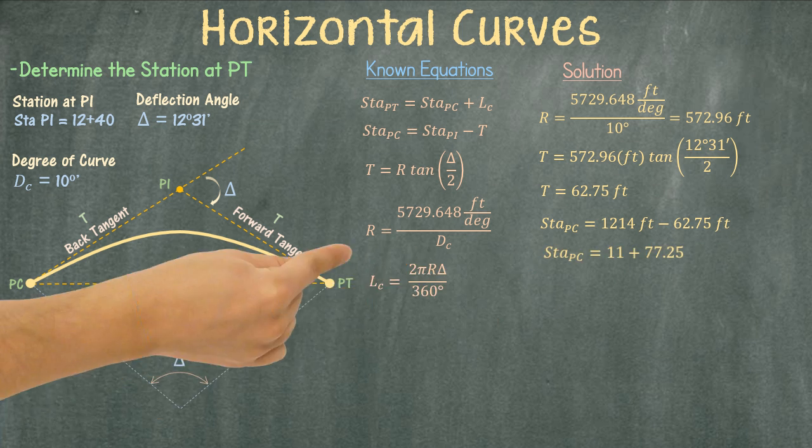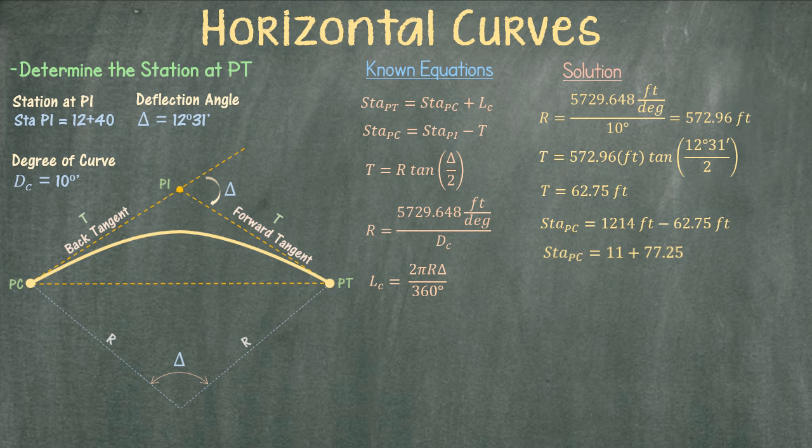The station at PC is 11+77.25. The last pending item is the length of the curve. We have both of the variables in the equation. I have determined that the length of the curve is 125 feet.